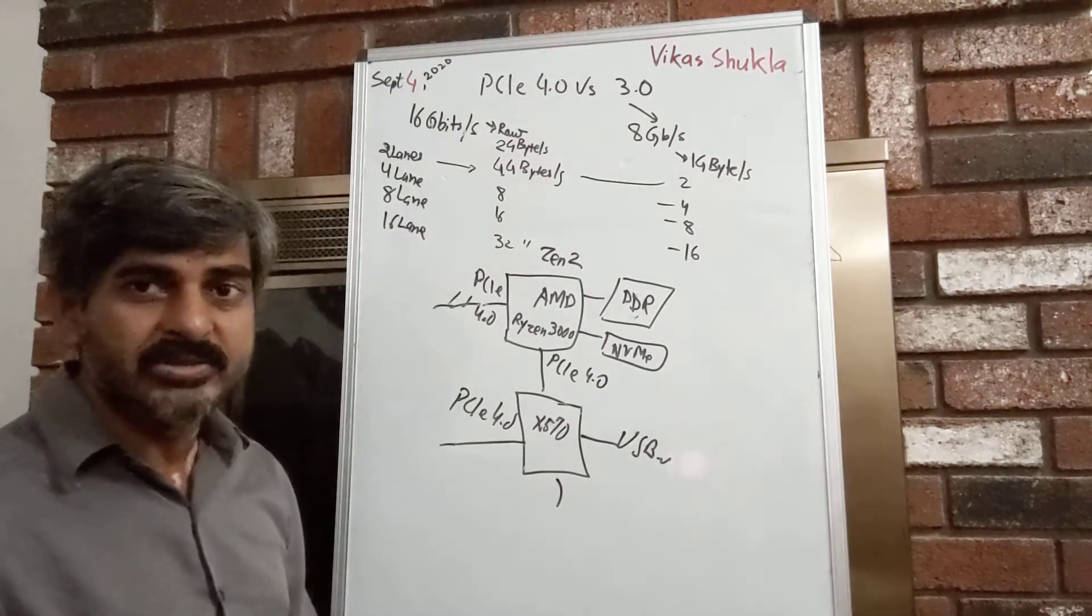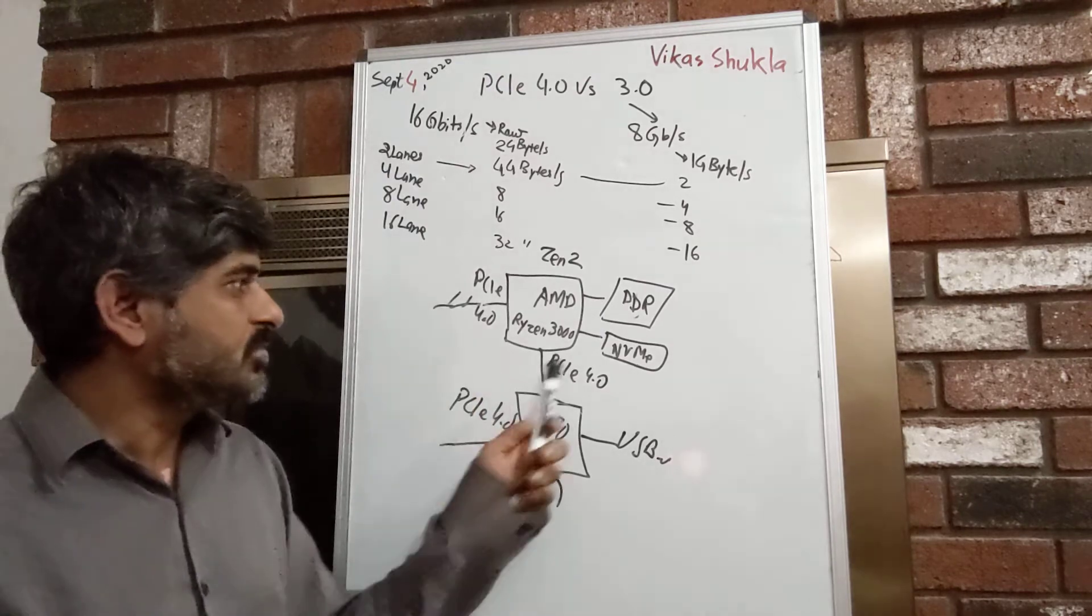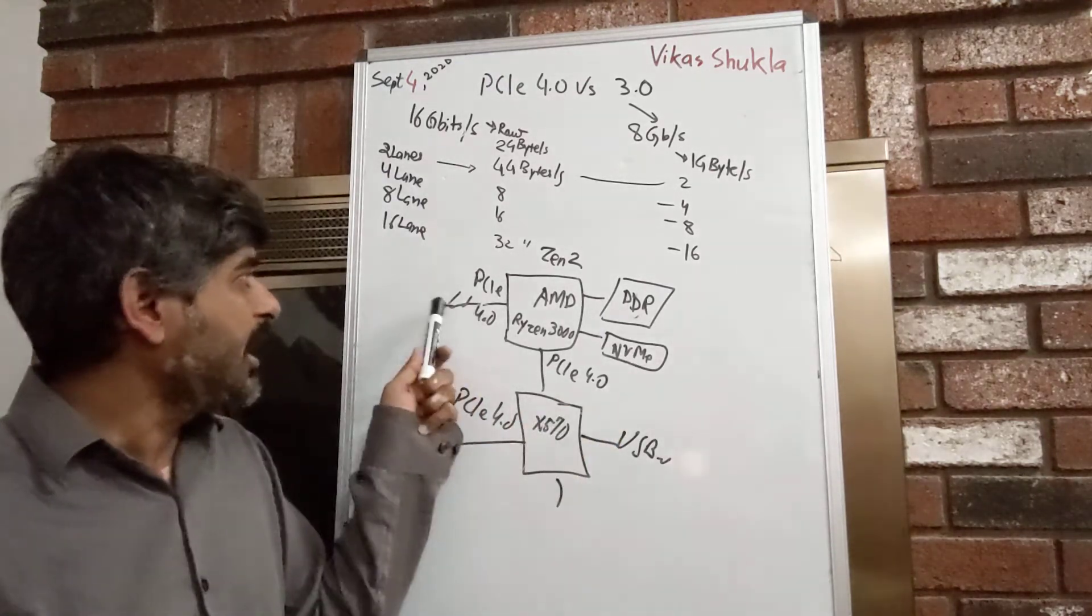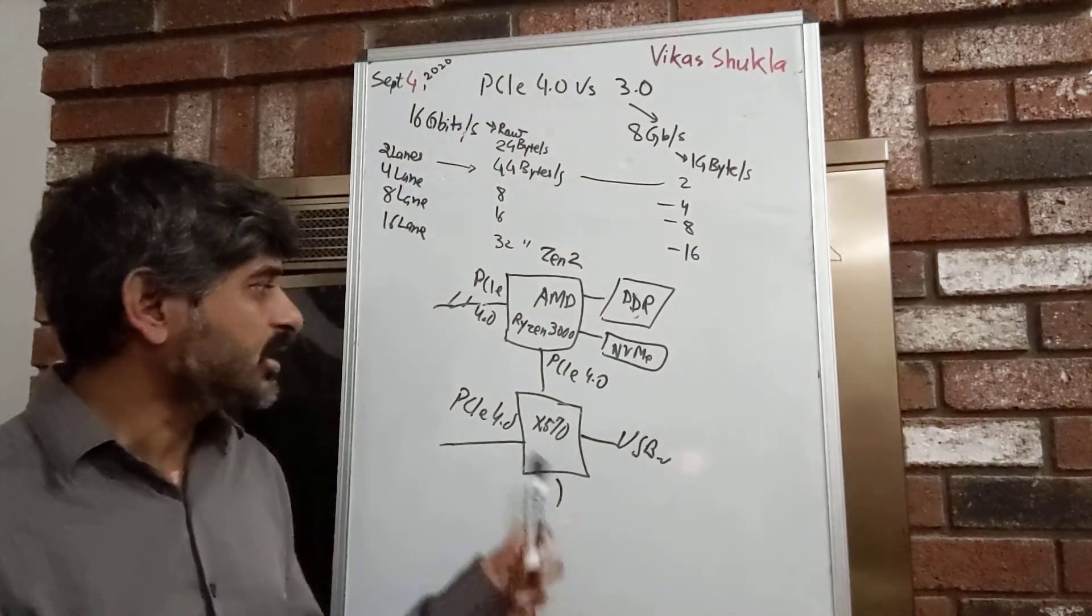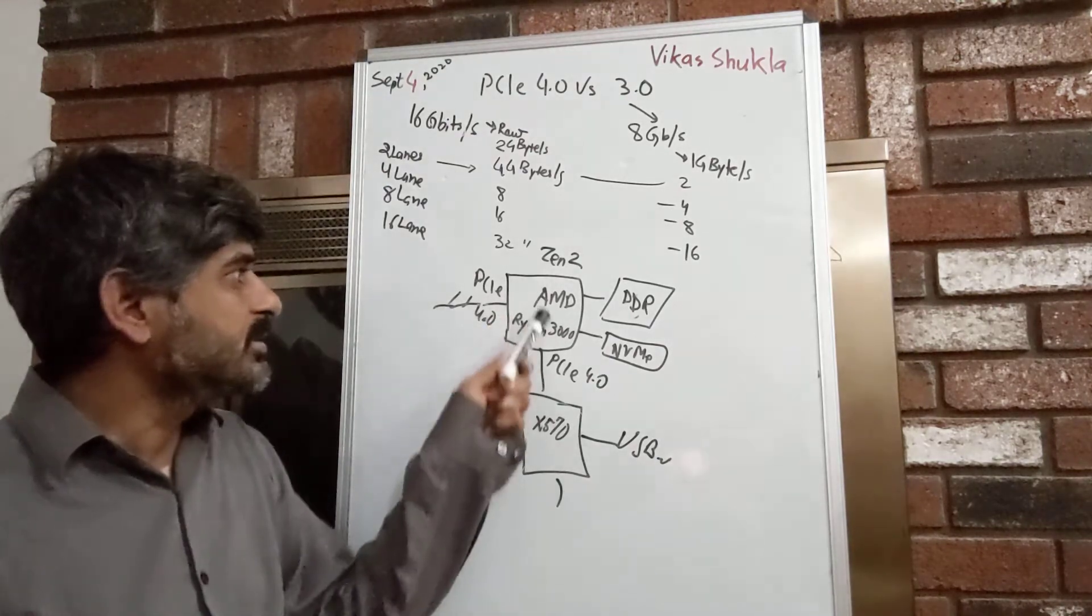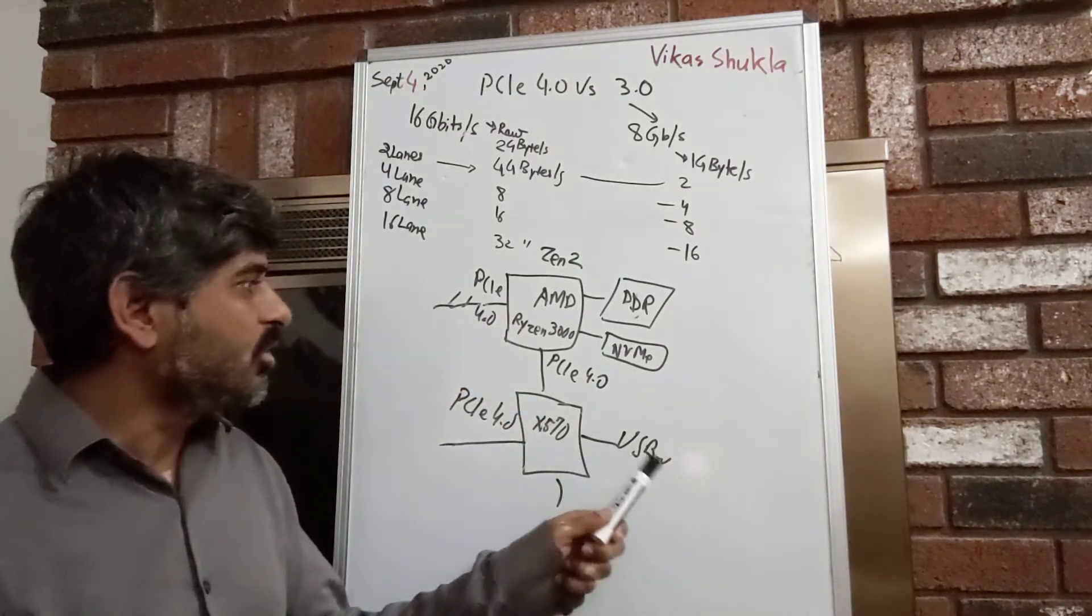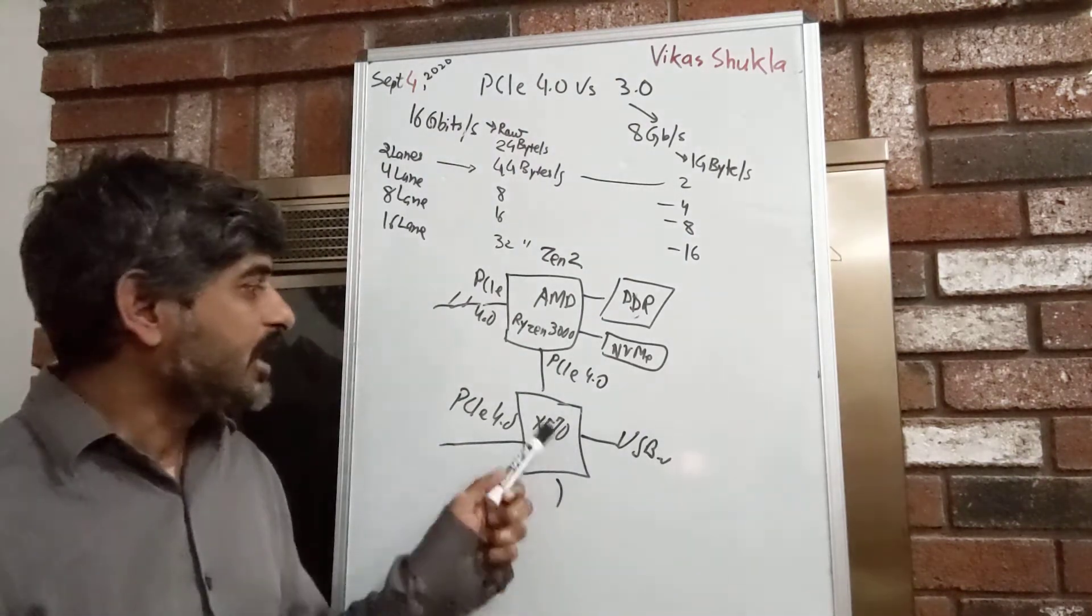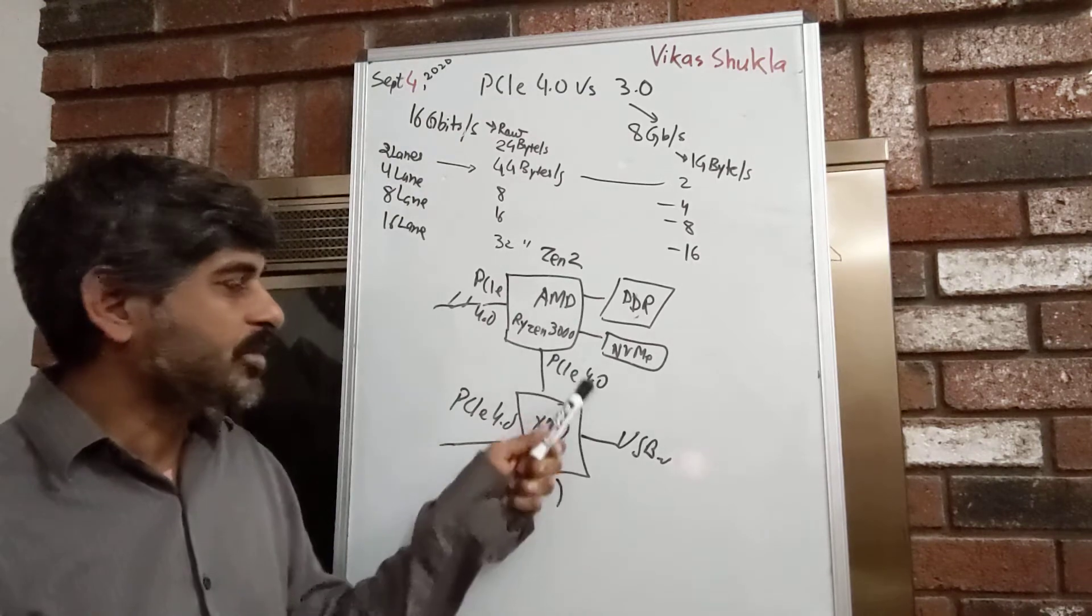But for now, the first devices that are going to take advantage of this speed is the non-volatile memory and the graphics card. The one thing, if you want to take advantage of this, make sure you not only get the Zen 2 processor of AMD or Tiger Lake from Intel, but you also select a motherboard that has the right chipset to take advantage of PCI Express 4.0.